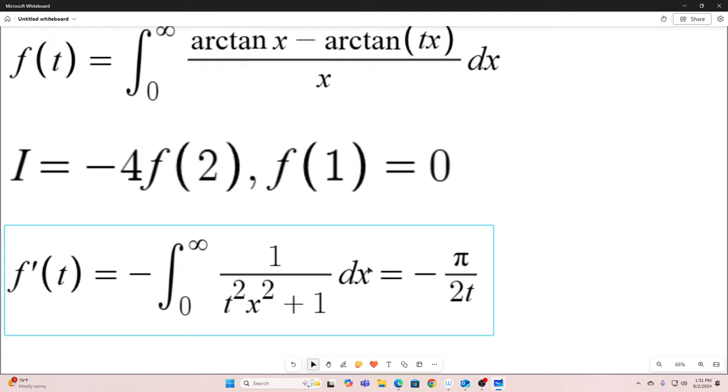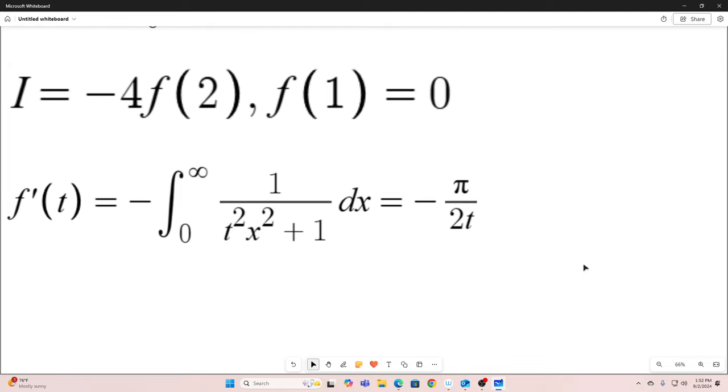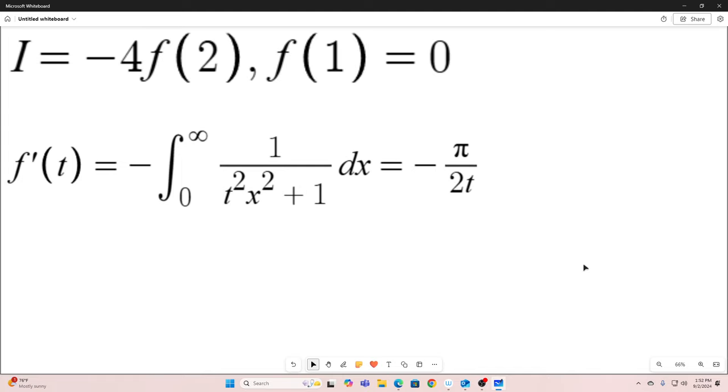That is an arctan form right here. And again, I'm not going to show the work on that. That evaluates to minus pi over 2t. All right. So now we have f prime of t. And if we can get to f of t and evaluate it at 2 and multiply it by negative 4, we have the value for our original integral. So to get back to f of t from f prime, we just integrate.